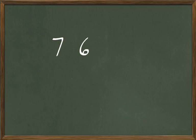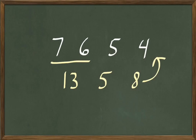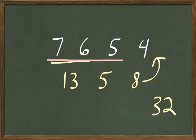Not so hard. How about 7 and 6 less 5 multiplied by 4? 7 and 6 are 13. Less 5: 13 less 5 are 8. And 8 multiplied 4 times? That's 32. So the answer to 7 and 6 less 5 multiplied by 4 is 32.